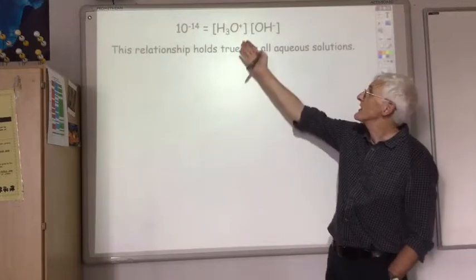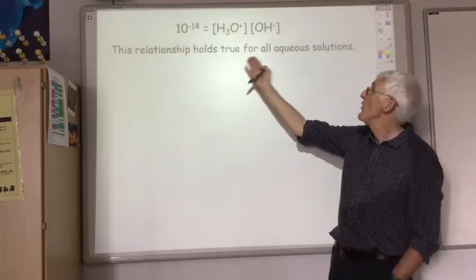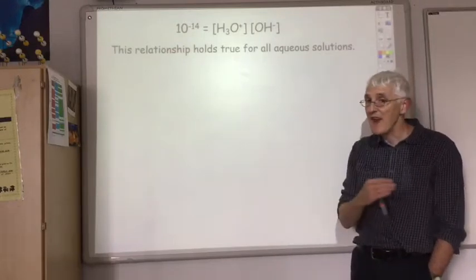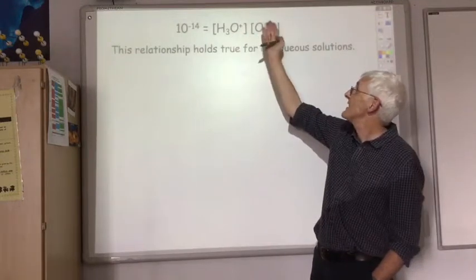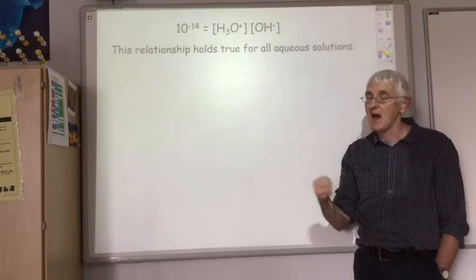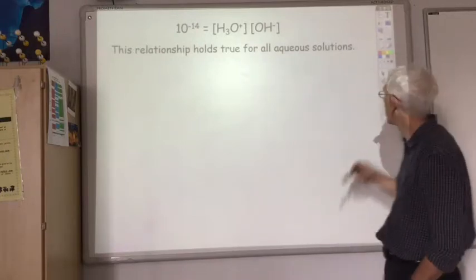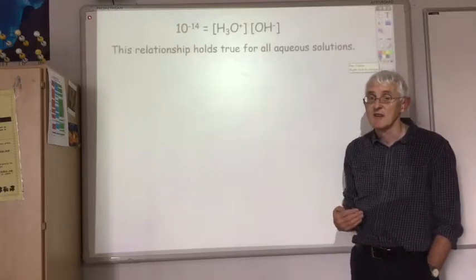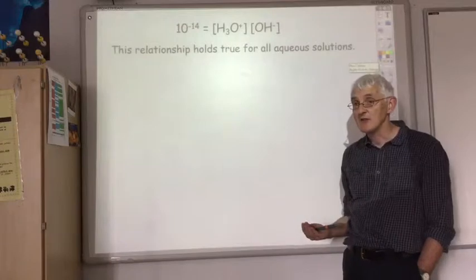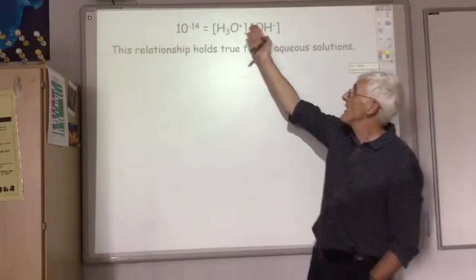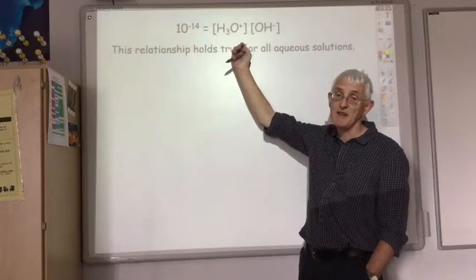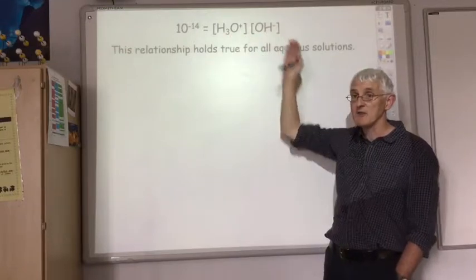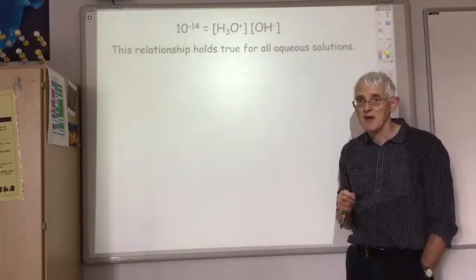The really useful thing about the ionic product is that it holds true for all aqueous solutions, not just water. So for any aqueous solution of any pH, the concentration of H+ times OH minus will equal 10 to the minus 14 at standard temperature and pressure. That allows us to do some quite interesting calculations. If we know the hydroxide ion concentration, we can calculate the hydronium ion concentration and hence the pH, and vice versa.